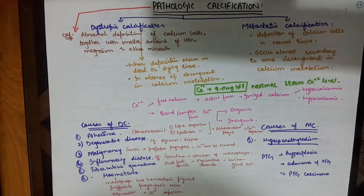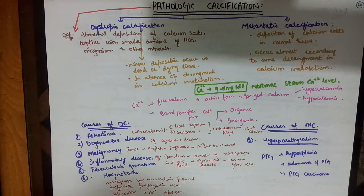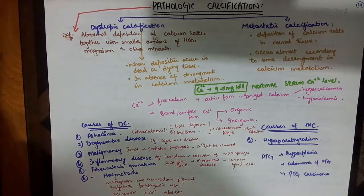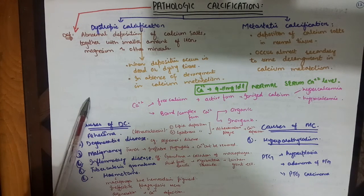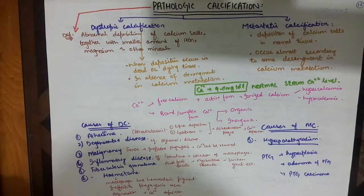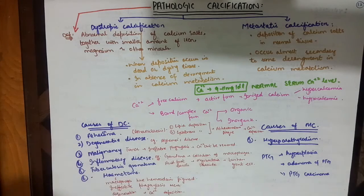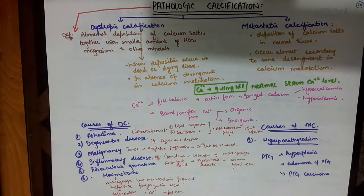Bismillahirrahmanirrahim. Let's discuss pathological calcification. Pathological calcification is of two types: dystrophic calcification and metastatic calcification. Pathological calcification is defined as the abnormal deposition of calcium salts together with smaller amounts of iron, magnesium, and other minerals in the body.